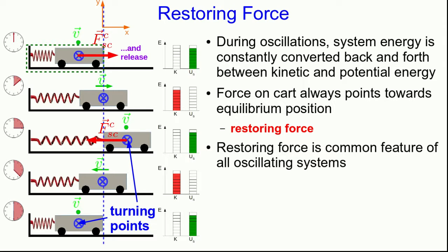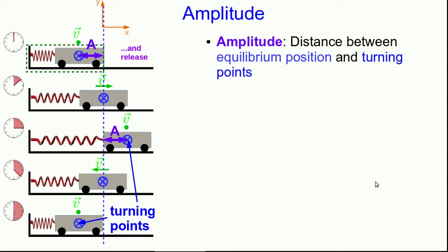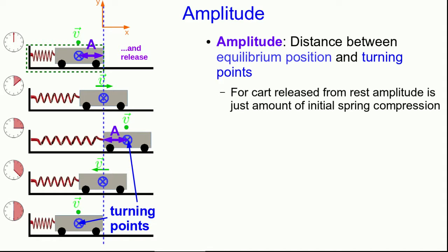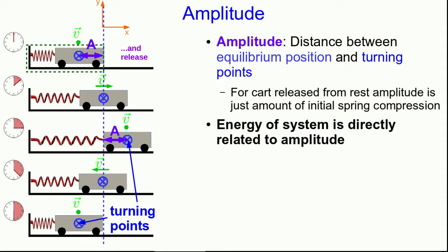These are common features of all oscillations: there's always a conversion back and forth between kinetic and potential energy, and there is always a restoring force. The distance between the equilibrium position and the turning points of the motion is what you could think of as the size of the oscillation — we call it the amplitude. For a cart released from rest, the amplitude is just the amount of the initial spring compression. You could also start a cart off with some non-zero velocity, in which case the amplitude wouldn't equal the initial spring compression. In any case, the energy of the system must be directly related to the amplitude, because when the cart is at its turning points, all of its energy is spring potential energy — the spring potential energy when the spring is deformed by an amount equal to the amplitude.